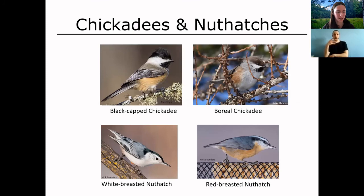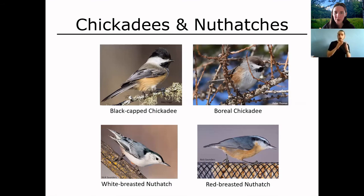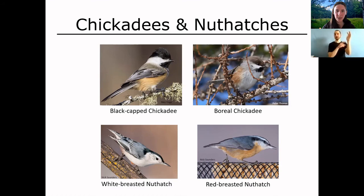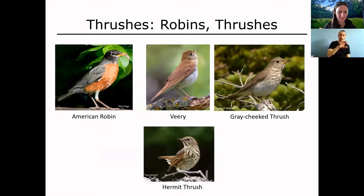Here we have chickadees and nuthatches — small birds that will come to feeders if you have one up, and can also be seen in or around towns. Nuthatches are really interesting because when you see them walking on a tree trunk, they're going upside down with the head facing down to the ground — quite different from any other family. The Black-capped Chickadee and Boreal Chickadee can be told apart quickly: the Black-capped Chickadee has black on top of its head, while the Boreal Chickadee has brown.